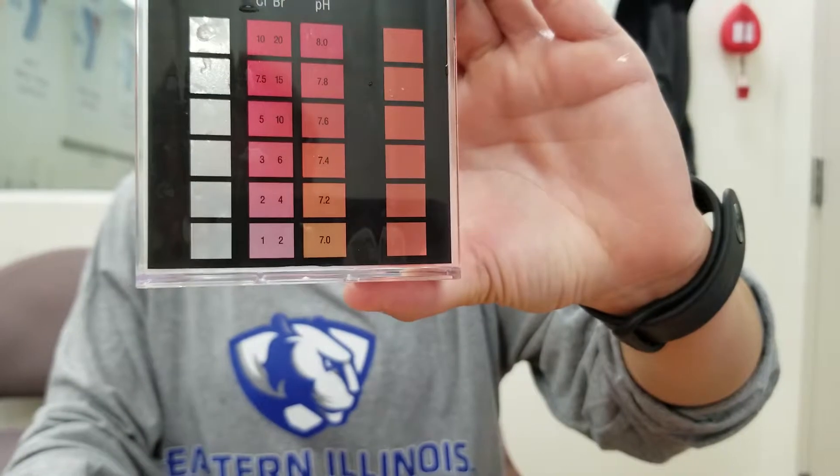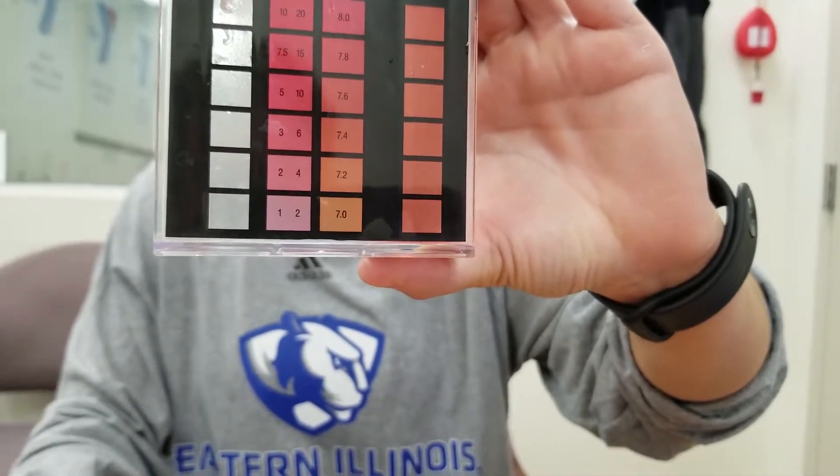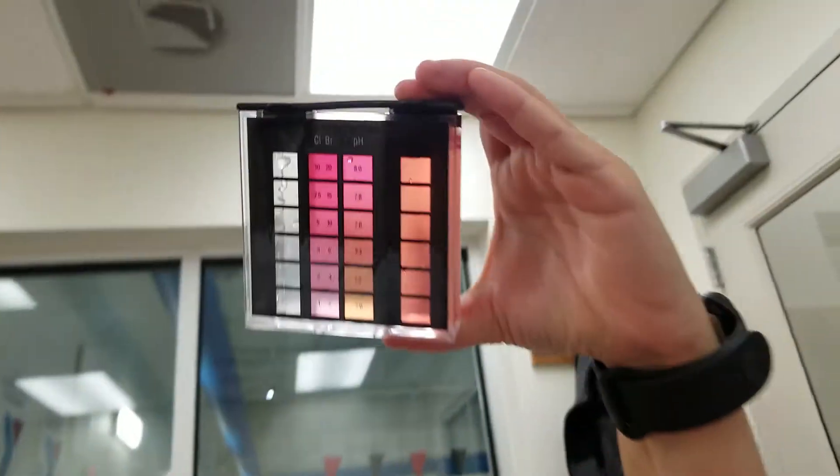Now we're capping it, inverting it, and we're going to get a color match. Sometimes the best way to read this is to put it up against a light or white surface to get a good reading.